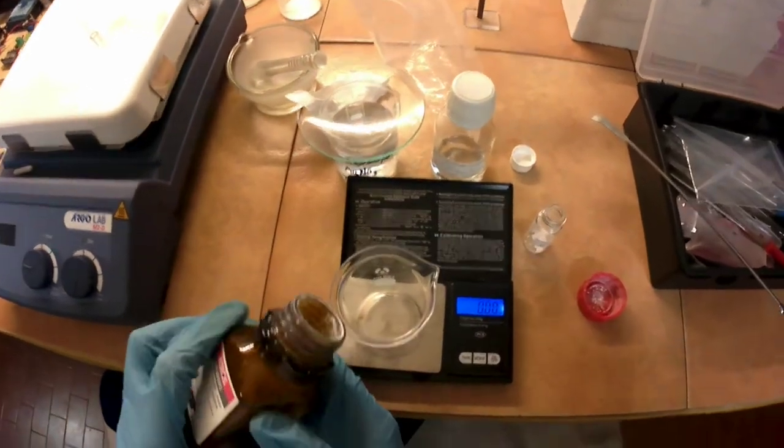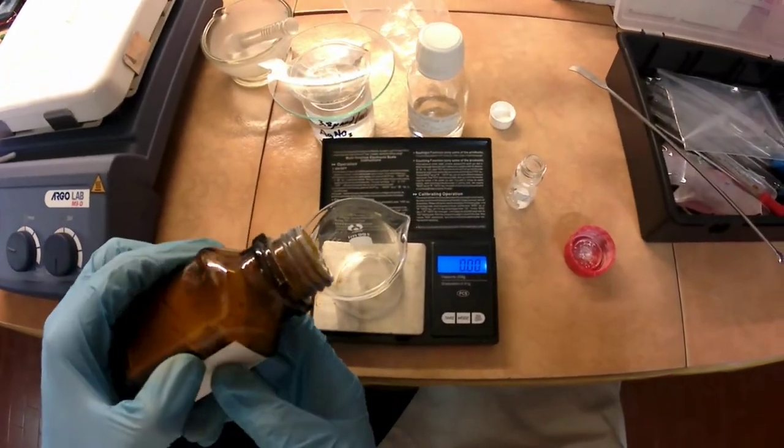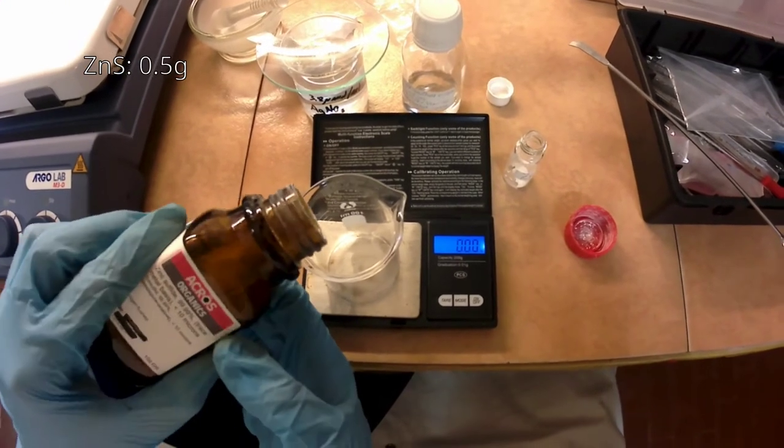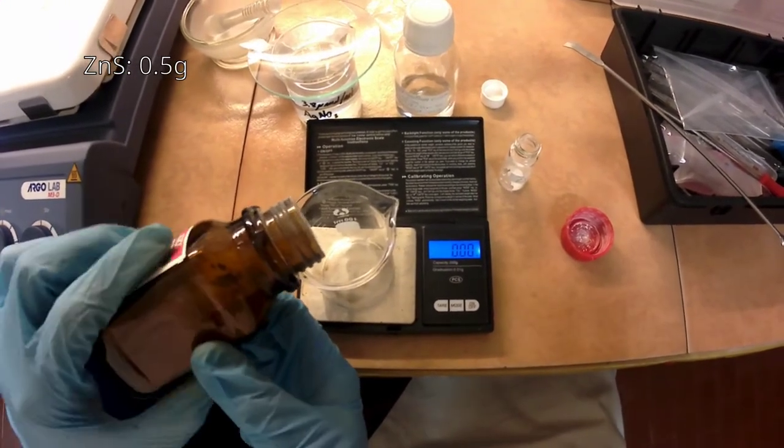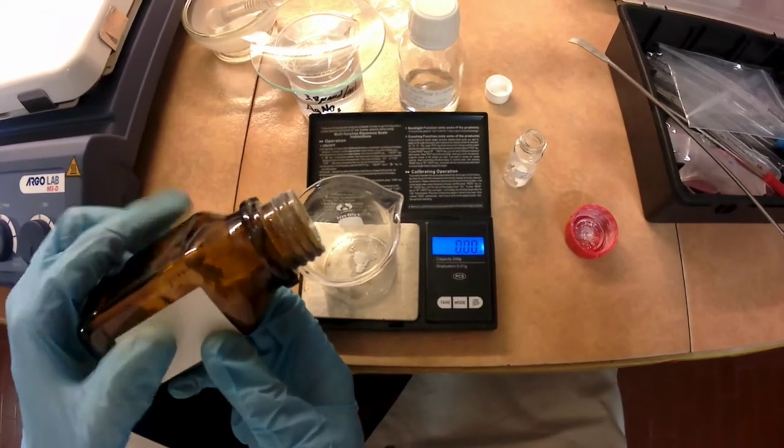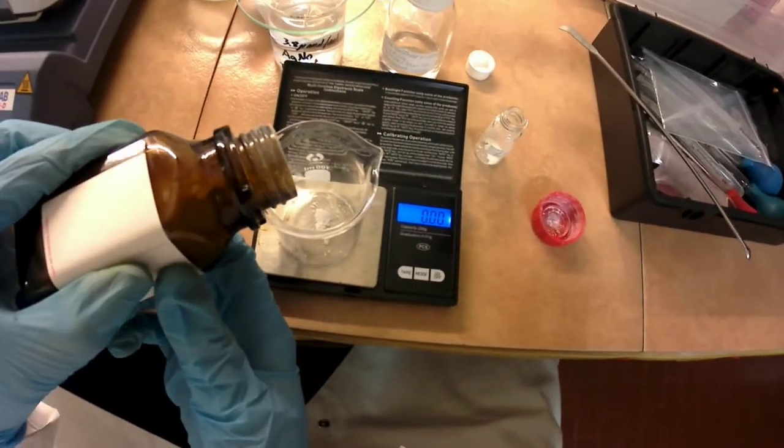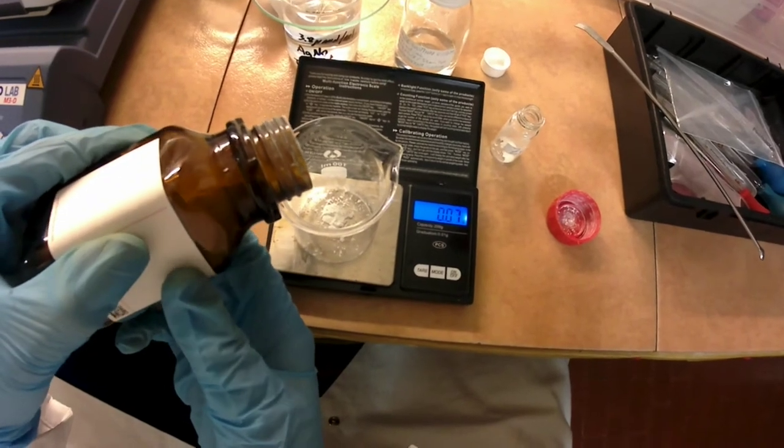The procedure is also remarkably similar to the green phosphor synthesis. The first step is to weigh out 0.5 grams of pure zinc sulfide in a clean beaker. In my case, I am using 99.99% zinc sulfide that I bought from a chemical supplier.